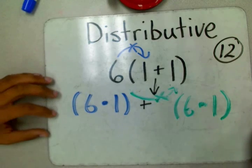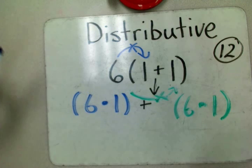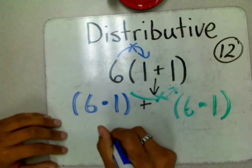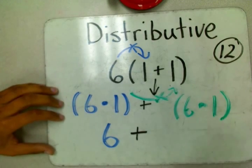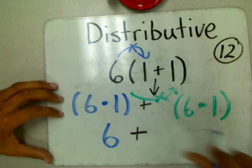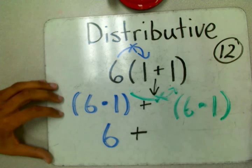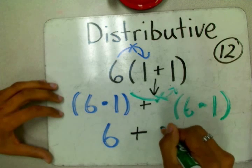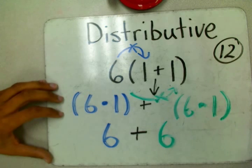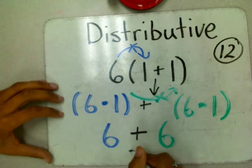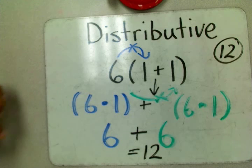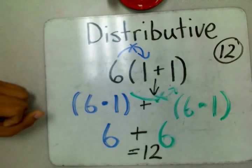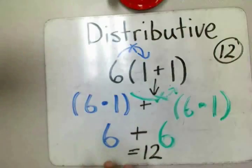6 times 1 is 6. What am I doing with that 6? I'm adding it to 6 times 1. 6 plus 6 equals 12. We just rediscovered, refreshed our memory on distributive property. You take the factor on the outside of the parenthesis and multiply it by everything that's inside of it.